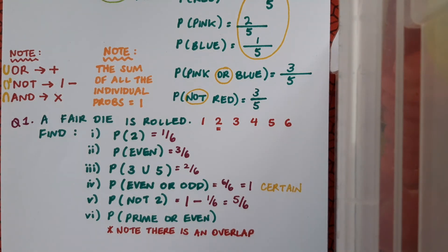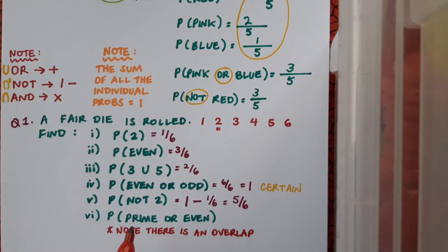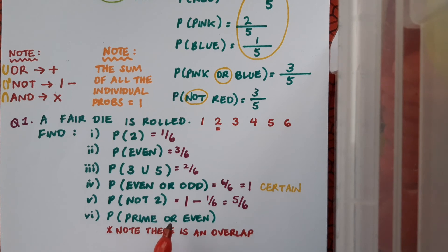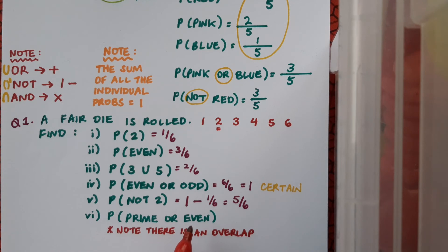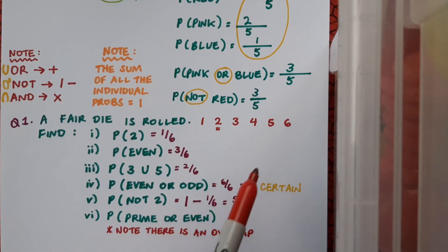If I was just to add the probability of a prime plus the probability of an even result here, I'd have three over six plus three over six, which would give me six over six. But actually not all my values are prime or even.